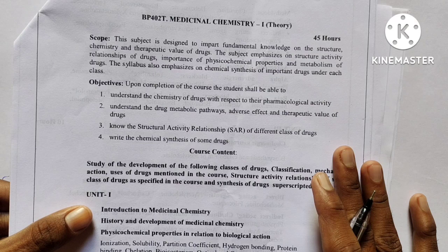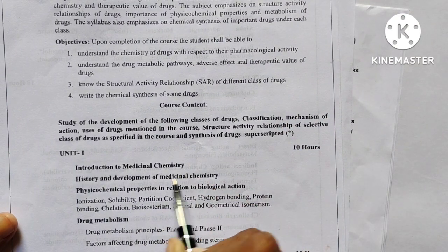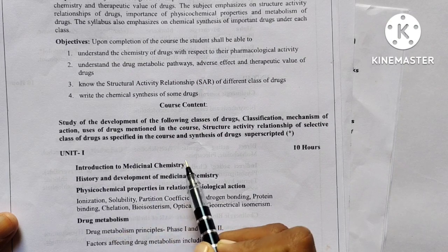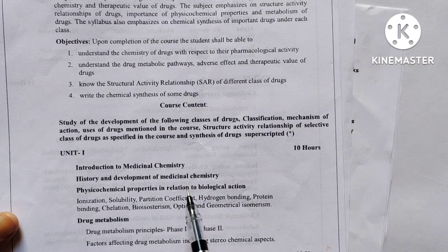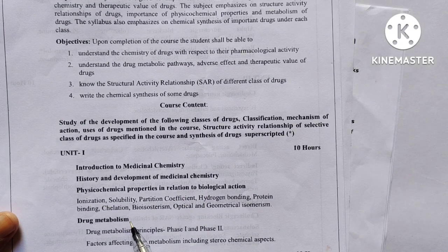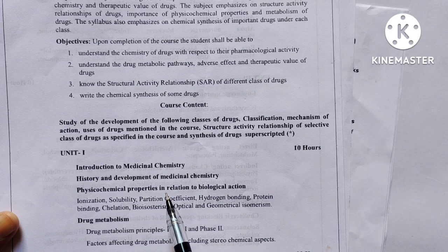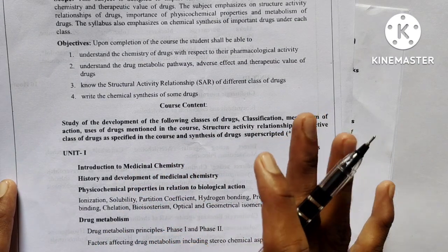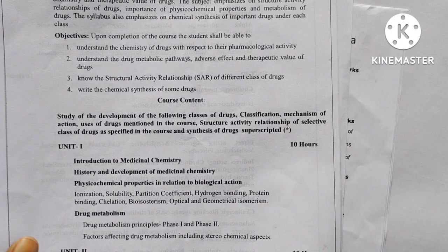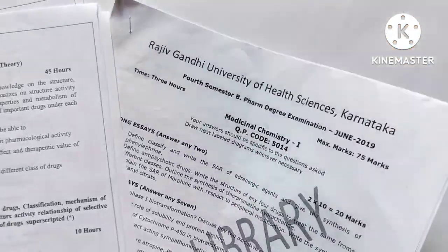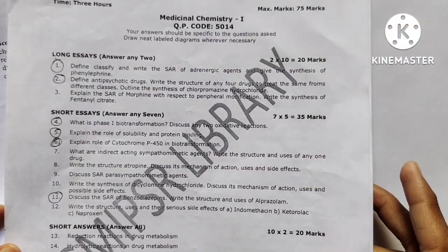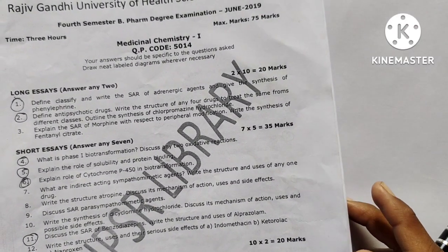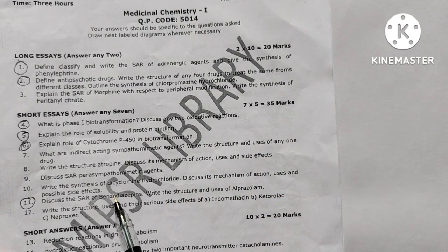In Unit 1, we will discuss introduction to medicinal chemistry, history and development of medicinal chemistry — these are not that important — but from here, physico-chemical properties in relation to biological action are very important. These include ionization, solubility, partition coefficient, hydrogen bonding, protein binding, chelation, bioisosterism, optical and geometrical isomerism. Now let's go through the question paper. This applies to any university, but the main thing is it should link with the Pharmacy Council of India.